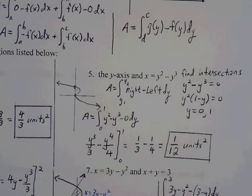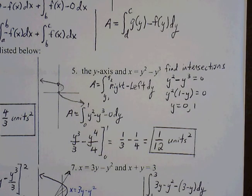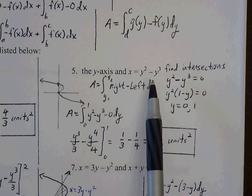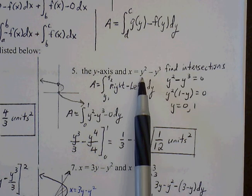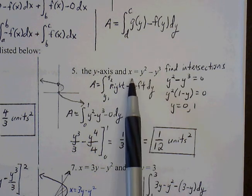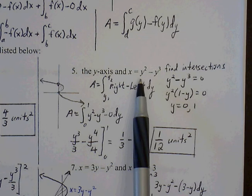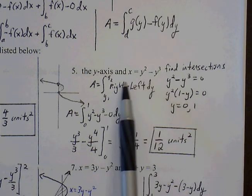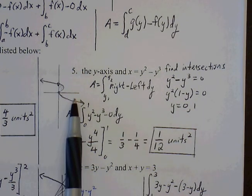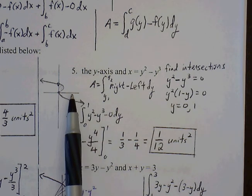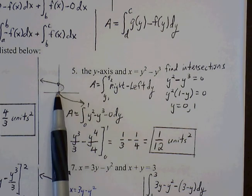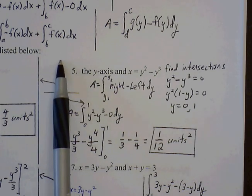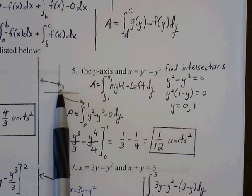All right, number 5. We have the y-axis and the graph x equals y squared minus y cubed. It's a little more difficult to figure out what this graph looks like since this is not a function. This is a graph in terms of y. So if we just plug in some ordered pairs, we're going to see that our graph looks something like this. So it's a cubic function, but it's turned on its side. So we're trying to find the enclosed region between this graph and the y-axis. So the enclosed region is going to be this portion.